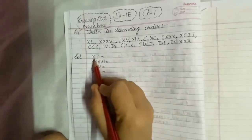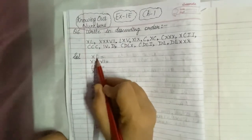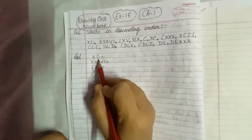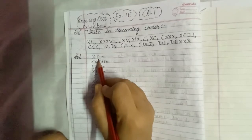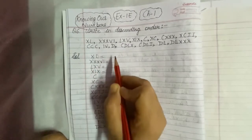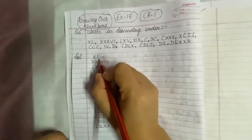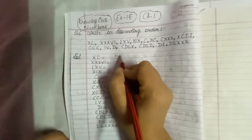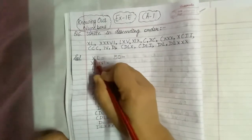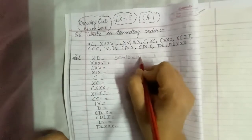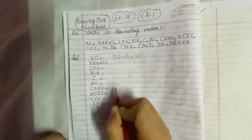The first one is XL. X is smaller than L, so we subtract the smaller from the greater. L stands for 50 and X stands for 10. So 50 minus 10 gives us 40.